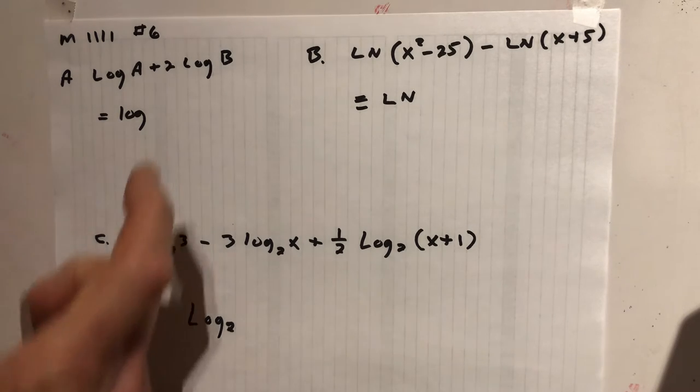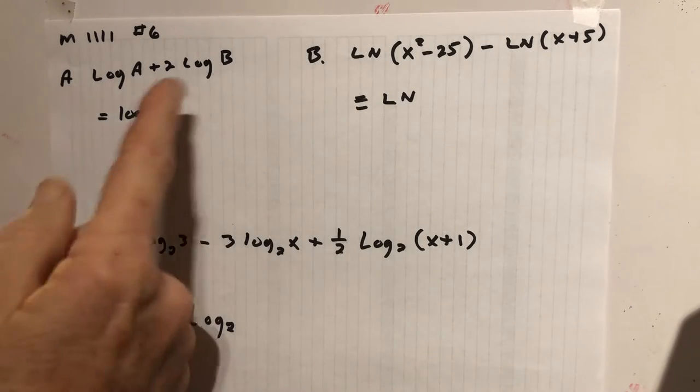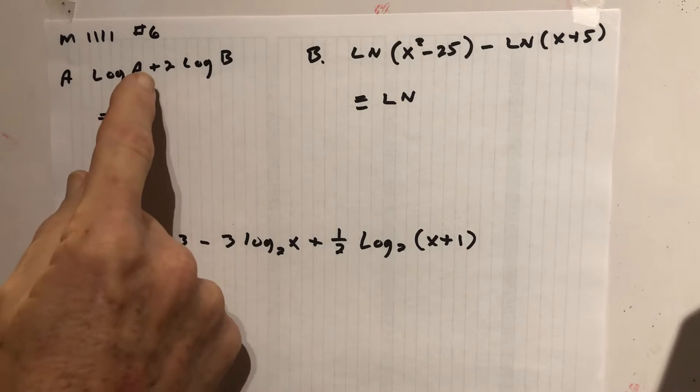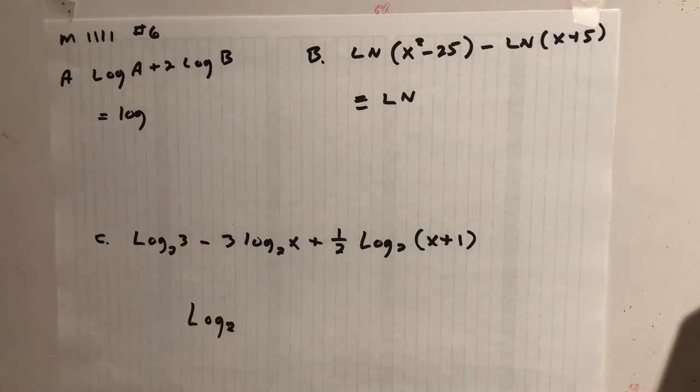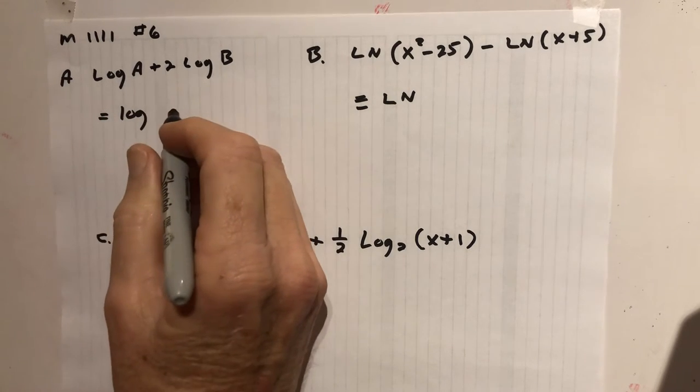This is where we're going to take logs that are written a couple times and put them together with only one log. So these two are going to combine. If it says add, we will multiply. So it's gonna be log of A and log of B.